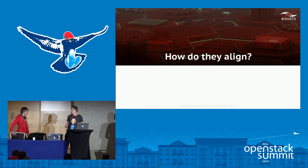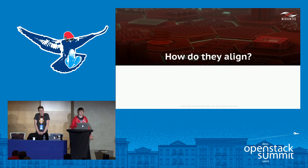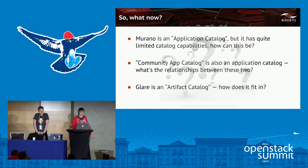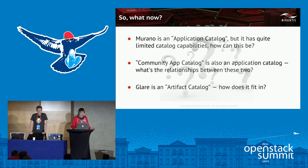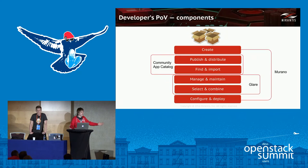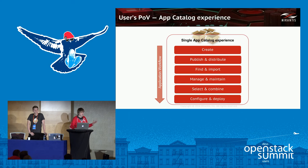So here we have three catalogs. How do they align? We quickly reviewed three projects which are usually called catalogs. There's Murano — the Application Catalog — but it doesn't actually have the actual catalog capabilities. There's the community catalog — and how does it fit with Murano? And then there is the artifact repository, Glare — how does it fit in the picture? The answer is that when we speak about these components, we're looking from a developer's point of view. But users do not care about projects or components.